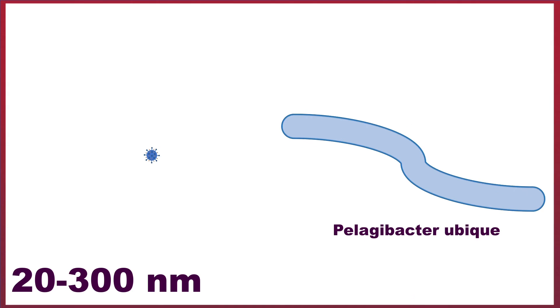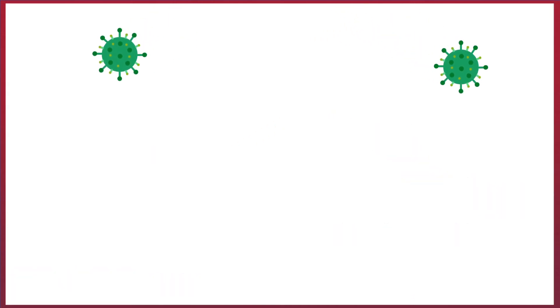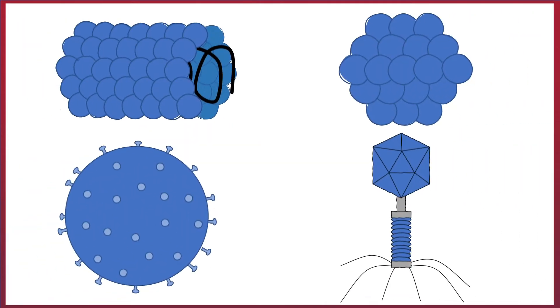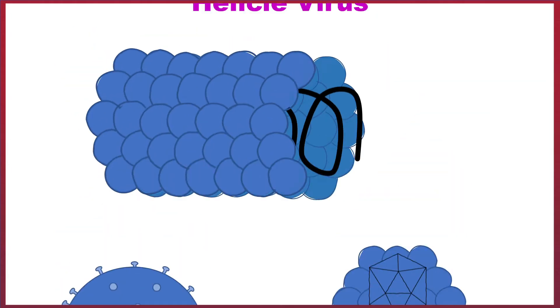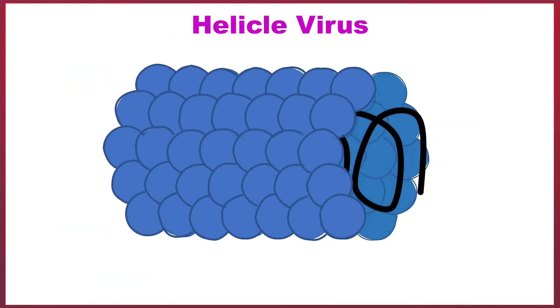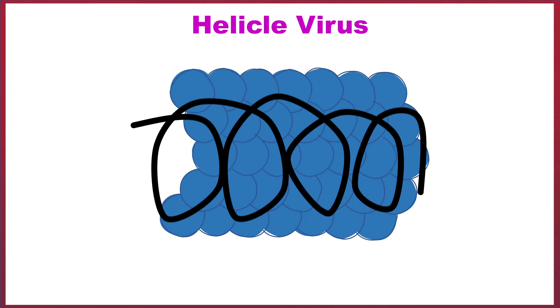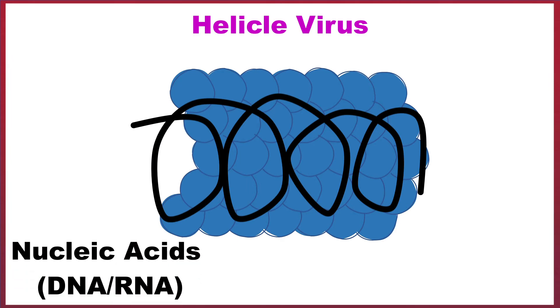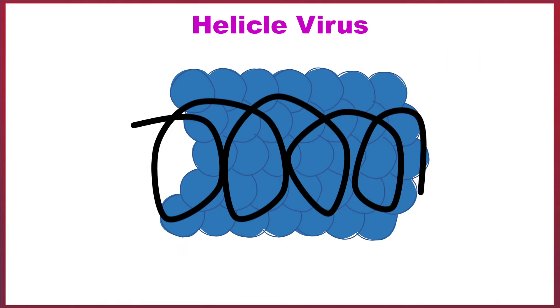These viruses can infect pretty much all forms of life, from bacteria to protists. And there are four classifications of viruses in nature. The first viruses we'll look at are the helical viruses, such as the tobacco mosaic virus. These consist of spiraling nucleic acids surrounded by a hollow cylinder of protein molecules called a capsomere, which protects the virus's genetic information.